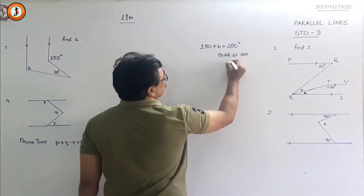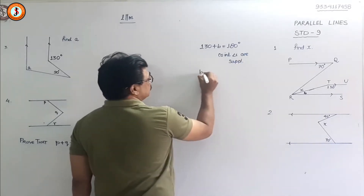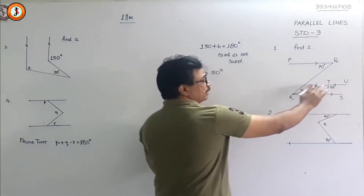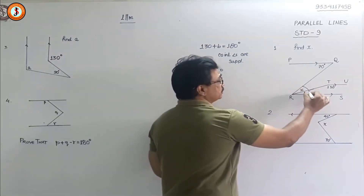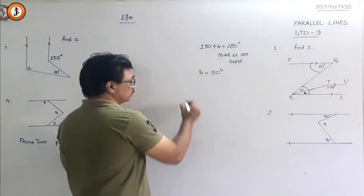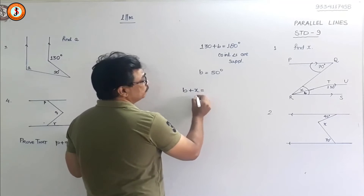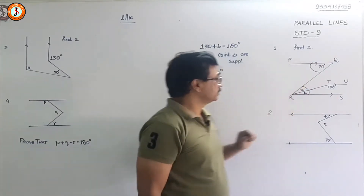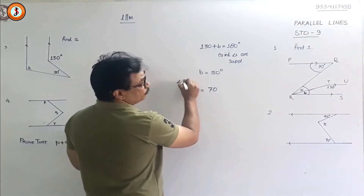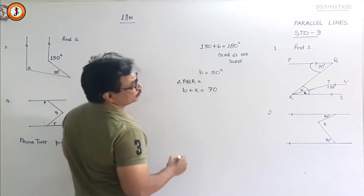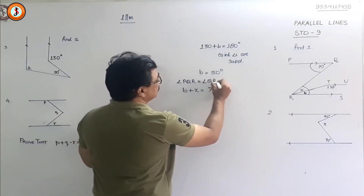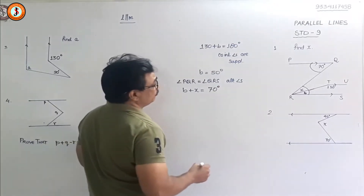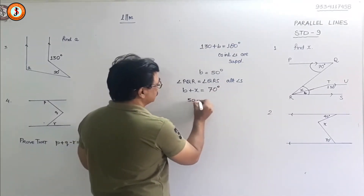Co-interior angles are supplementary, so b is equal to 50 degrees. Once we got b, we forget about this line - we think this line is not there. Now b plus x will be equal to 70, because angle PQR and angle QRS are alternate angles. So b plus x is equal to 70 degrees. Since b is 50, that gives us 50 plus x equals 70 degrees.